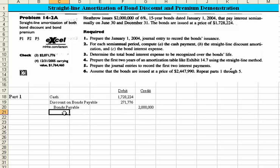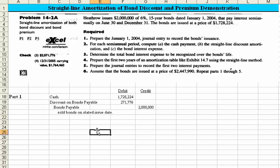Then we should record what this is for, so we would leave a note like 'Sold Bonds on Stated Issue Date' and indent that to be in proper form. That takes care of the solution to Part 1.